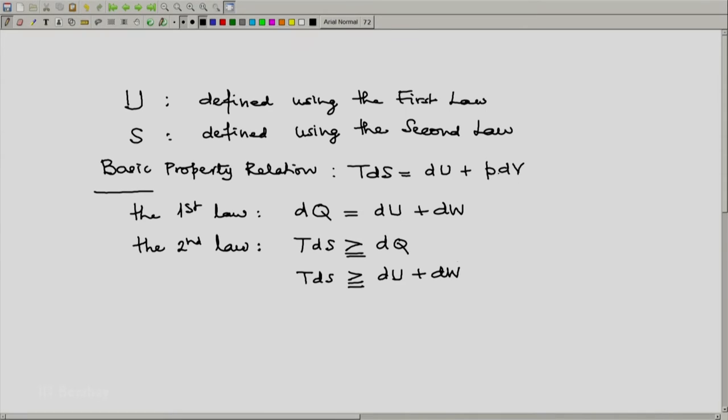Notice that when we write a property relation, T dS will be followed by an equality and on the right hand side we will have P dV. Whereas when we write the second law, T dS will be followed by greater than or equal to and on the right hand side you will either have dQ an interaction or a combination of dU and dW where dU is a differential of property but dW is a small work interaction.